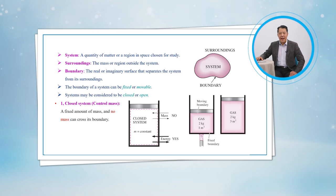Notice that energy may cross the boundary, and part of the boundary may move. Everything outside the gas, including the piston and the cylinder, is the surroundings.